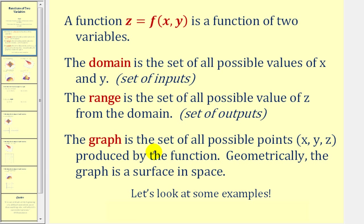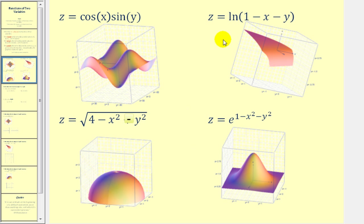Let's first start by taking a look at some cool graphs of functions in terms of two variables. Here we see z equals cosine x times sine y — notice it produces a surface with hills and valleys. Z equals the natural log of 1 minus x minus y produces another surface. Here we have z equals the square root of 4 minus x squared minus y squared. And lastly, z equals e to the power of 1 minus x squared minus y squared, which looks like a peak.